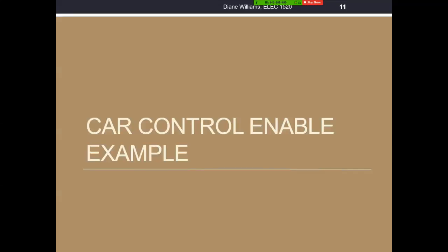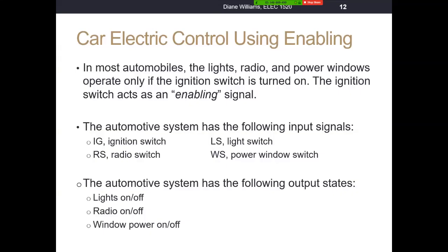Let's go to an example now. In most automobiles, the lights, radio, and power windows operate only if the ignition switch is turned on. The ignition switch acts as the enabling circuit. We'll define our automotive system as having four inputs: IG is the ignition switch, RS is the radio switch, LS is the light switch, and WS is the power window switch. The system will have three outputs: lights on or off, radio on or off, and window power on or off.